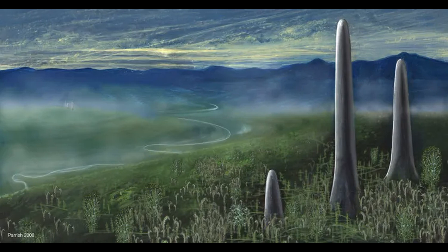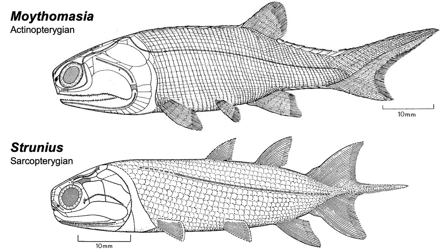Life on land is more or less the same as it was in the last episode, with early land plants, fungi, and terrestrial arthropods happily living without any vertebrates feeding on them. There are very few differences between these lineages once we get down near the common ancestor of lobe- and ray-finned fish. This can be seen with early members of each group, such as Strunius, an early lobe-finned fish, and Moythomasia, an early ray-finned fish, both from the late Devonian.